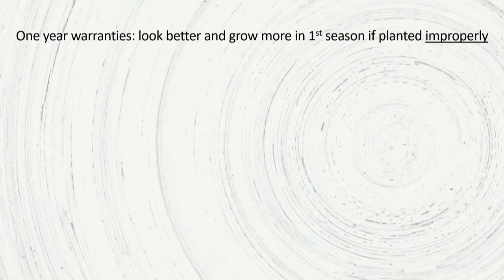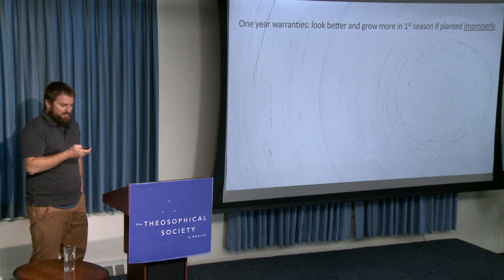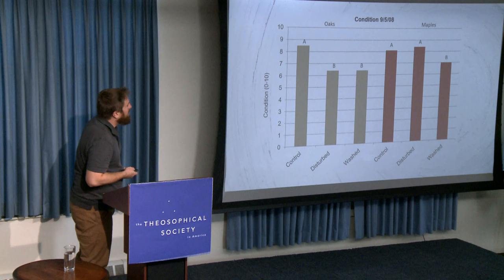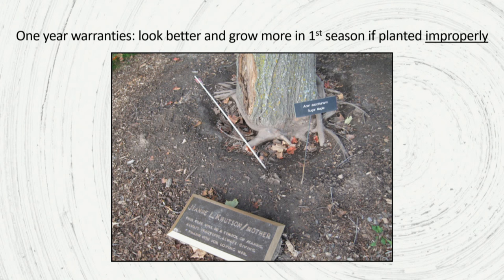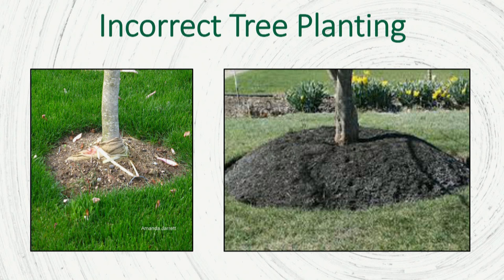When you buy from nurseries, they come with warranties, and those undisturbed trees looked great in year one. But you don't want to wind up five, ten, or fifteen years down the road with a memorial tree that's failing. We've got to address those circling root issues for the long-term health and performance of these trees.